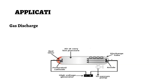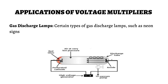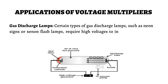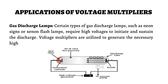Certain types of gas discharge lamps, such as neon signs or xenon flash lamps, require high voltages to initiate and sustain the discharge. Voltage multipliers are utilized to generate the necessary high voltage levels for these lamps to operate.